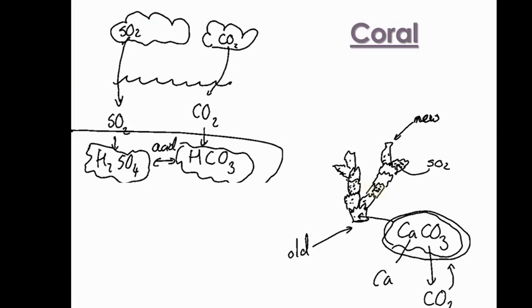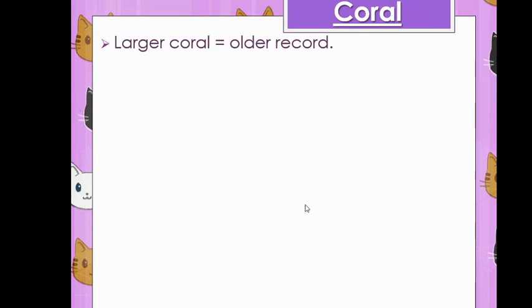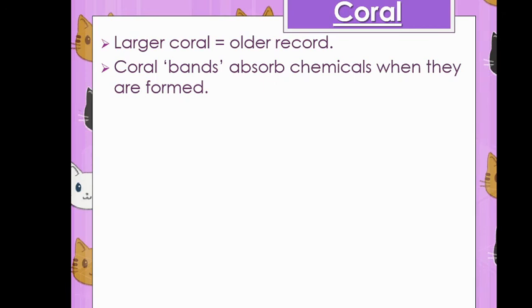Coral. These are the sketches that I did in a lesson where we talked about the evidence. And we can see here a little idea of there being a balance between what chemicals are in the air and what is in the water. So if there's pollution in the air, there'll be pollution in the water. Sulfur dioxide and carbon dioxide are particularly well absorbed by water and they will react to form two different acids, sulfuric acid and carbonic acid. These chemicals, along with any other pollution that are in the water at the time, get soaked in to these new bands of coral as those new bands are being formed. So the larger the coral, the older the record. The coral bands absorb chemicals when they are formed.